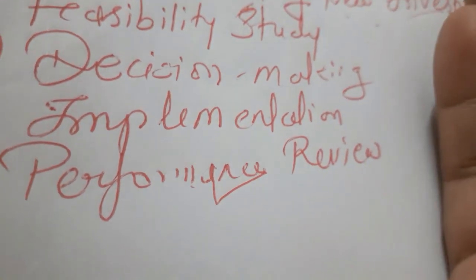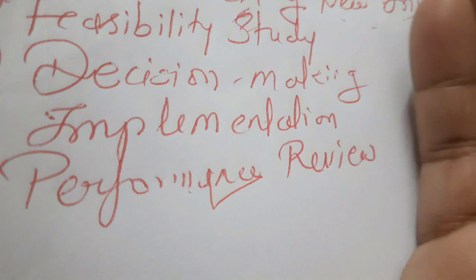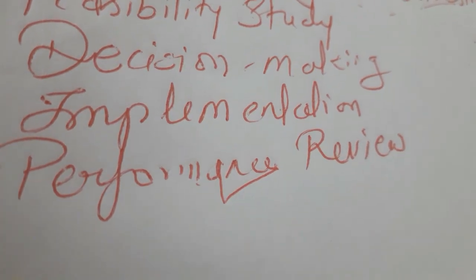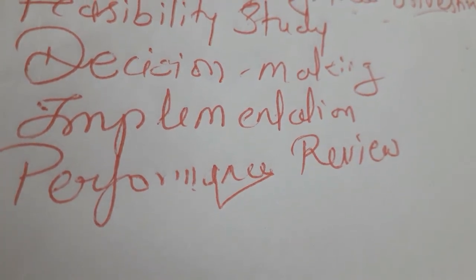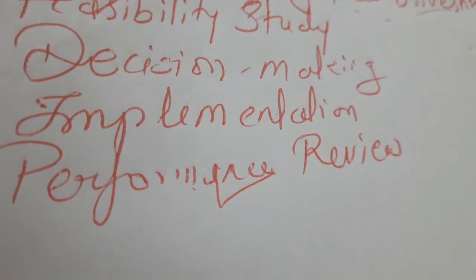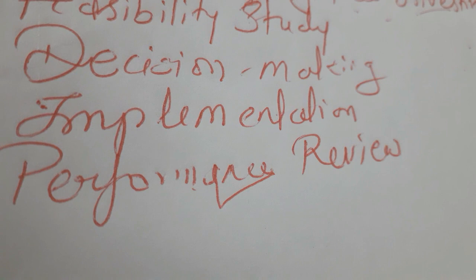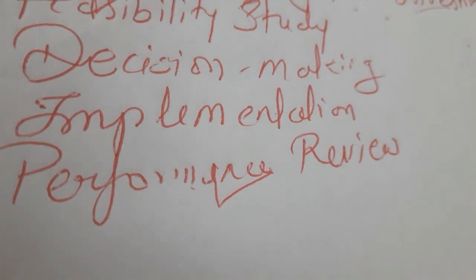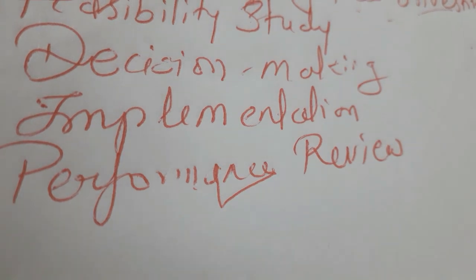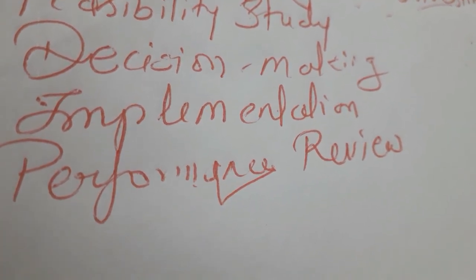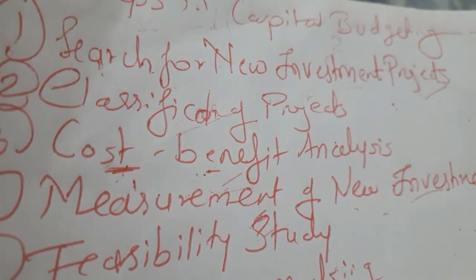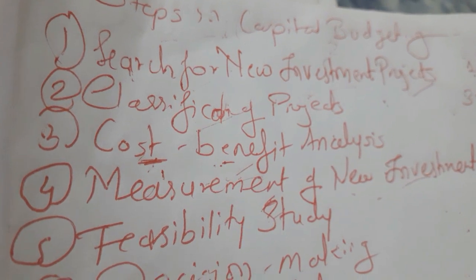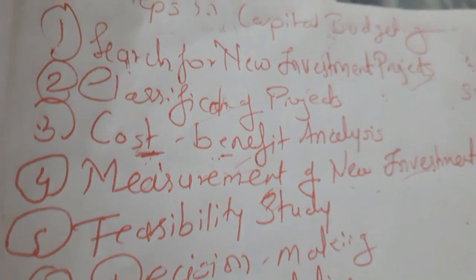The eighth and last step is performance review. After setting up your project, you review how the machinery is working — whether it has been working fine over the last two or three years, whether the quantity produced by the machinery is correct, whether machineries require extra repair charges, and what warranty and guarantee contracts you have given for the machinery. These are all the eight steps involved in capital budgeting, which is a frequently asked topic in examinations.